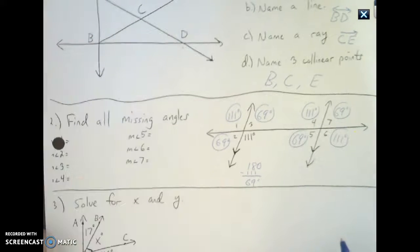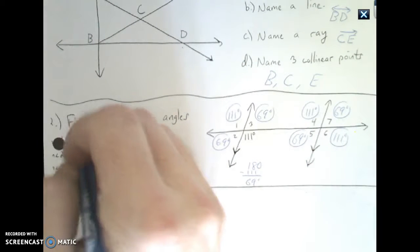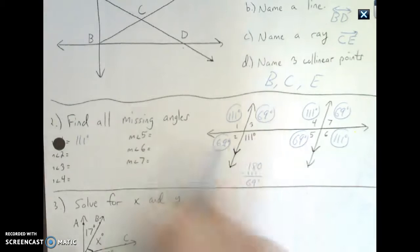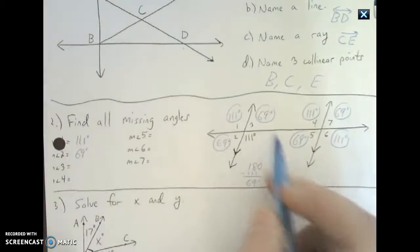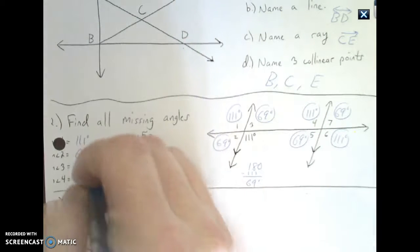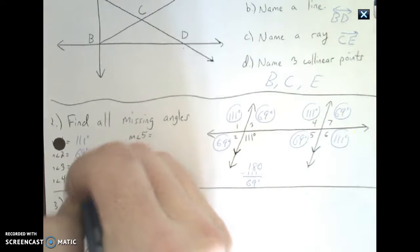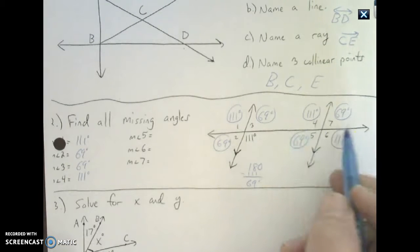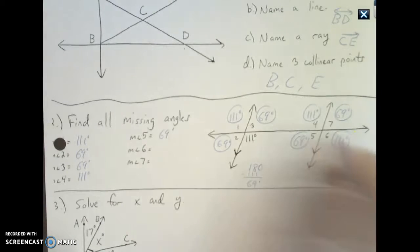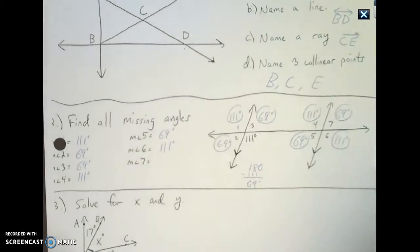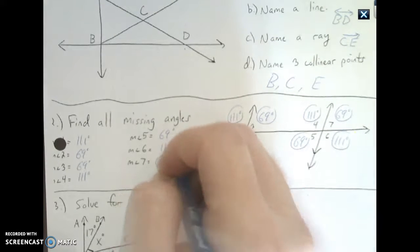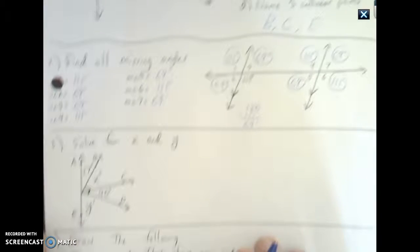I can pick this up and move this over here. So 111, 69 degrees, 111, 69 degrees. Now I come over here. 1 is 111, 2 is 69 degrees, 3 is 69 degrees, 4 is 111, 5 is 69 degrees, and 6, 7 is 69 degrees.